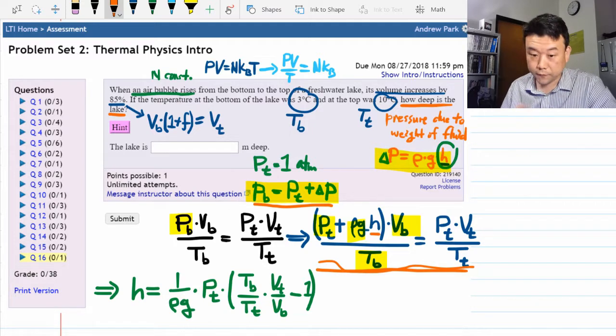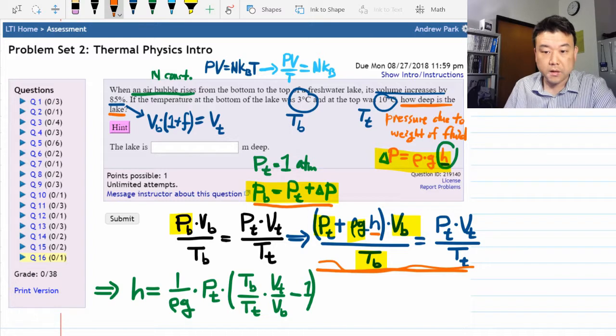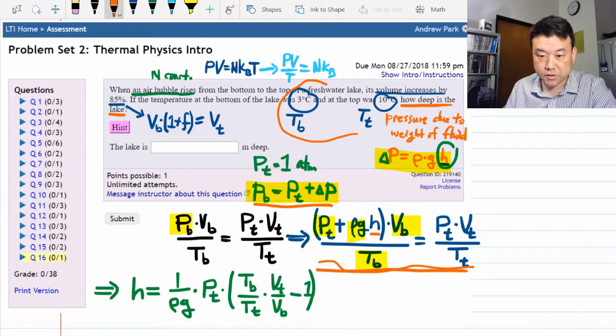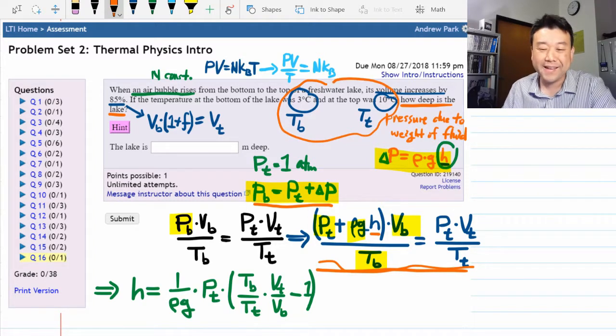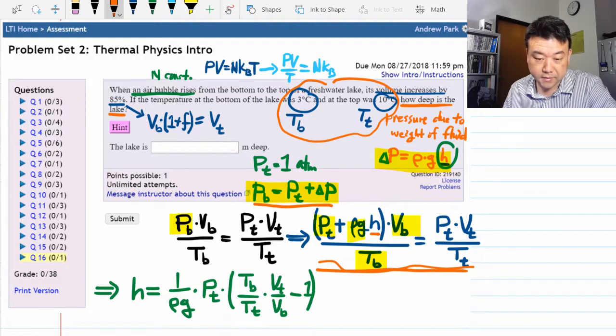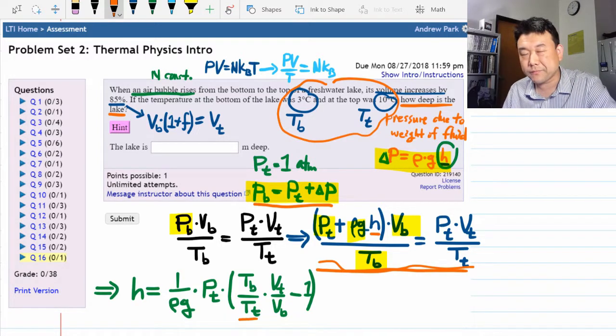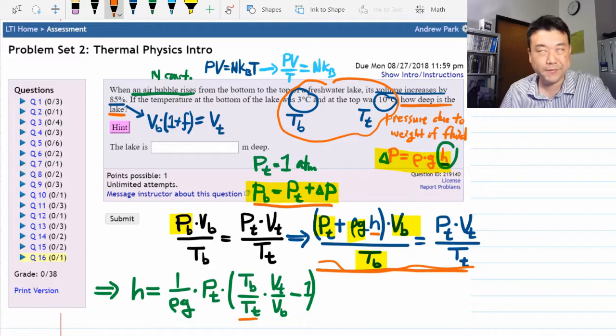Once you've verified it, then all the numbers are there to plug in. So you are given the temperatures, just make sure you convert it to Kelvin. You will see that this ratio is very close to one, but different enough that you cannot just let that be equal to one.